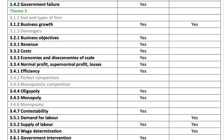That theory-of-the-firm material will not appear in paper three, but it's going to be a key part of paper one. Now when it comes to market structures, they have taken out perfect competition, monopolistic competition, and monopsony. So essentially you just have three market structures to revise: oligopoly, monopoly, and contestable markets.